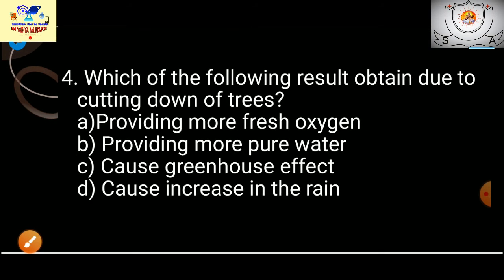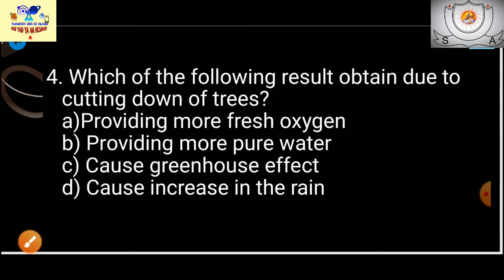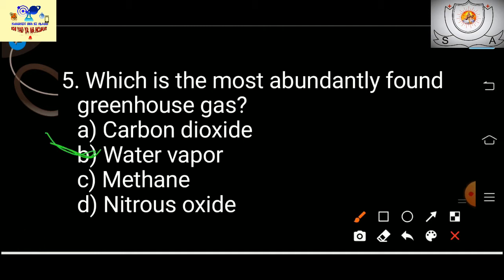Question 4: Which of the following results from cutting down trees? Options include more oxygen, cleaner water, greenhouse effect, or increased rain. The answer is greenhouse effect. Question 5: Which is the most abundantly found greenhouse gas? The answer is water vapor — it is the most abundant.